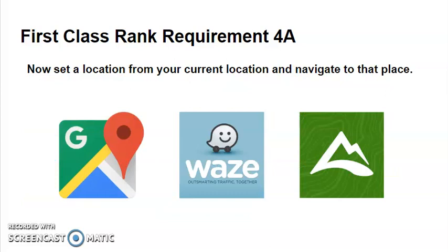Once you know the coordinates of the location you're at and the location you want to go to, you can set your current location and the place that you want to navigate to. Some other apps I also like besides Google Maps are Waze and AllTrails — both really good apps. There are many other apps out there and you may like a different one. There's not a right or wrong answer to this.